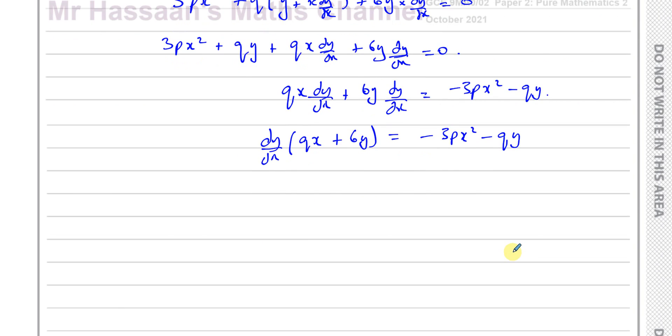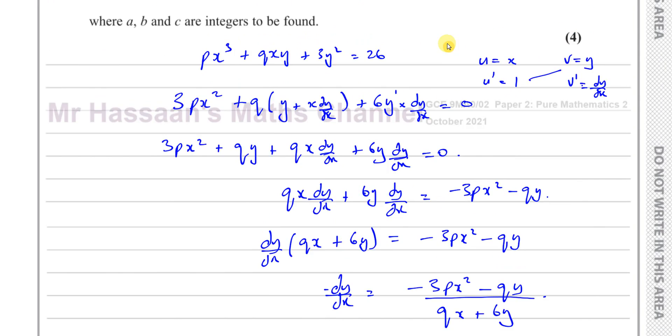So qx + 6y equals -3px² - qy. I can divide both sides by qx + 6y. So I'm left with dy/dx is equal to -3px² - qy over qx + 6y.